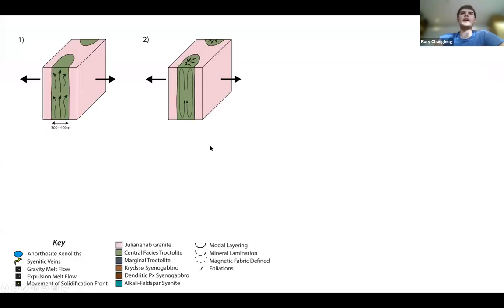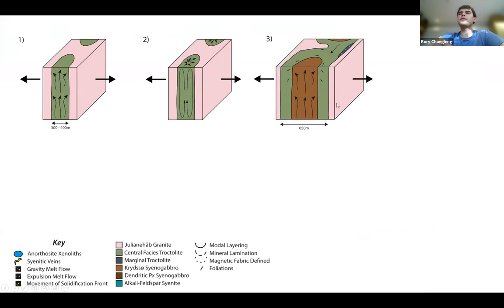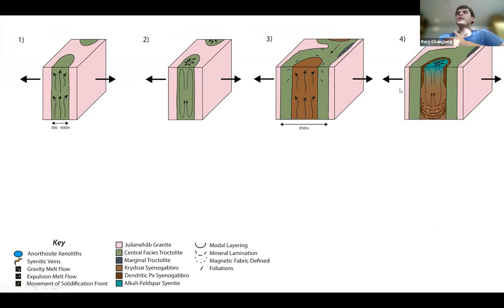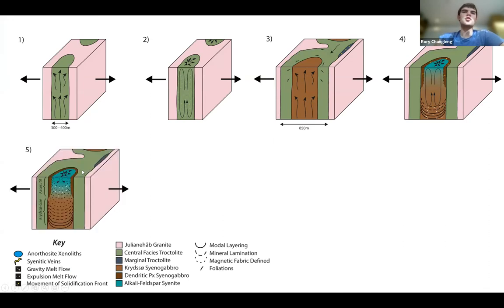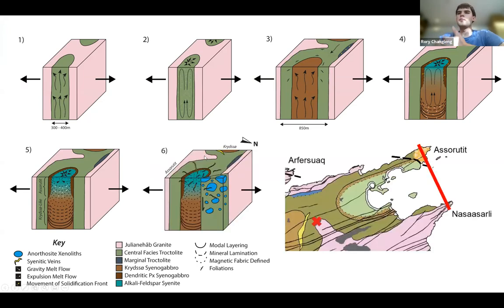So a final model to put it all together. We have this initial emplacement here of these finger-like lobes, which then start to convect. Then we have further emplacement of the more evolved melt, which causes the reorientation around the margins of this fabric. Then this will continue to convect, and differentiate to become essentially more sluggish over time at the top as you get more evolved melt. And at the same time, we have this crystallization front here coming inwards of the syenogabbro. And then finally, we have the model we see today.